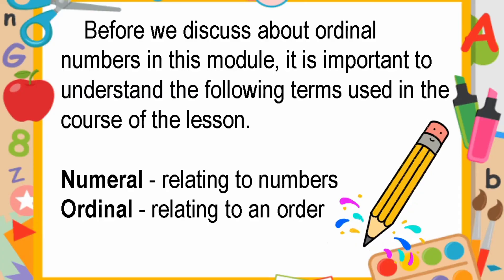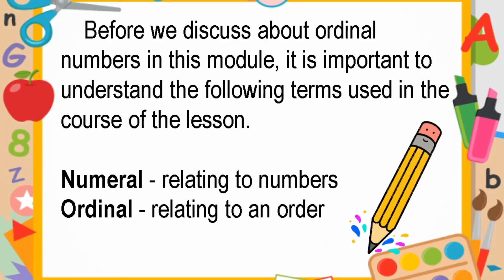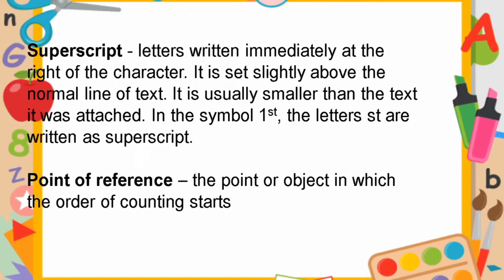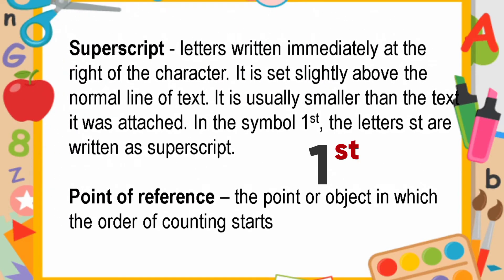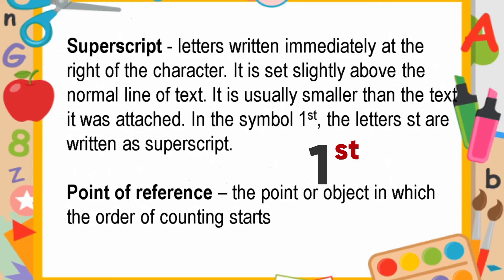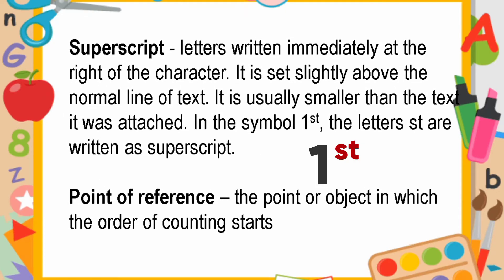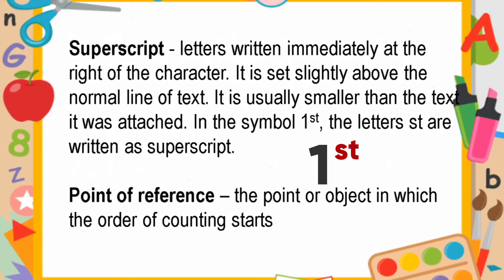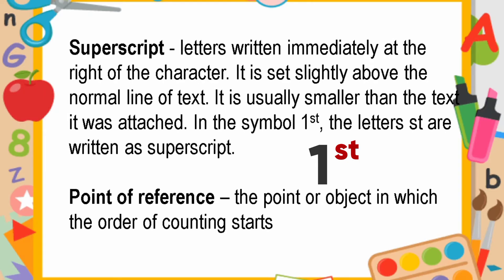Numerals relate to numbers, and when we say ordinal, it relates to order or position. When we say superscript, it is a letter written immediately to the right of a character, set slightly above the normal line of text, and usually smaller than the text it is attached to. In the symbol 1st, the letters ST are written as superscript. When we say point of reference, it is the point or object from which the order of counting starts.